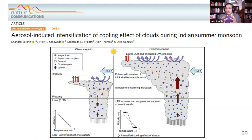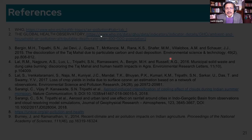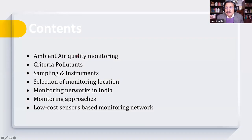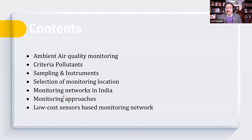Now we move to the air quality monitoring module — the final module for the first two hours of induction training. The main contents to be covered are: the ambient monitoring system, criteria pollutants, sampling methods, types of instruments, site selection (siting of instruments), the current status of monitoring, future outlook, and how monitoring can be augmented with alternate technologies like low-cost sensors or satellites.